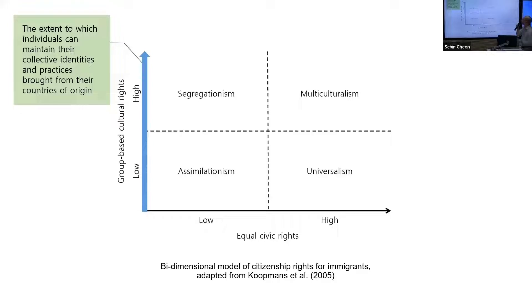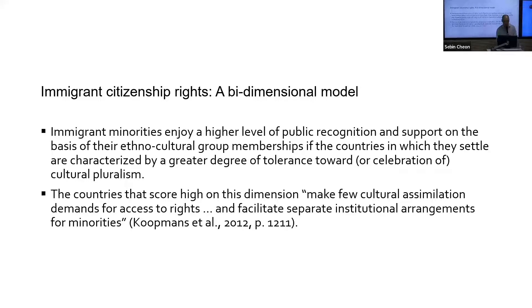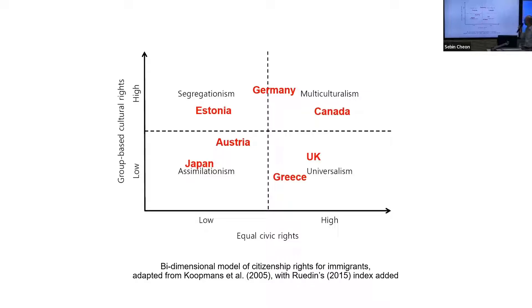The vertical group-based cultural rights dimension differentiates countries in terms of the extent to which individuals can maintain their collective identities and practices from their countries of origin. This dimension captures how far a country's integration policies undergird a culturally pluralist understanding of citizenship, as opposed to a monocultural understanding. Countries that score high on this dimension make few cultural assimilation demands and facilitate separate institutional arrangements for minorities.